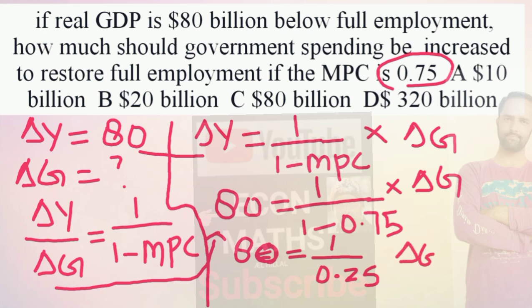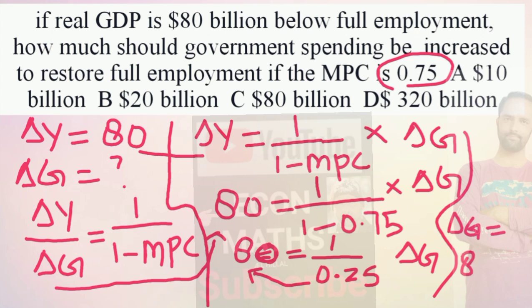1 minus 0.75 comes out to be 0.25, so ΔG equals 80 into 0.25, which comes out to be 20 billion dollars. That means our change in government spending should be 20 billion dollars so that full employment is restored. I hope I made myself clear in this video.